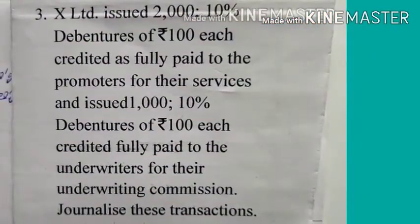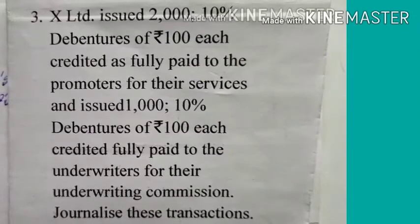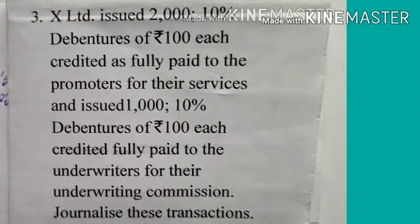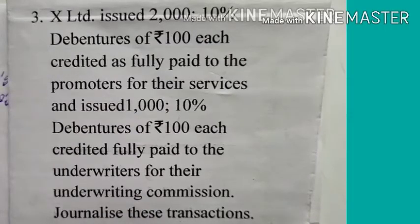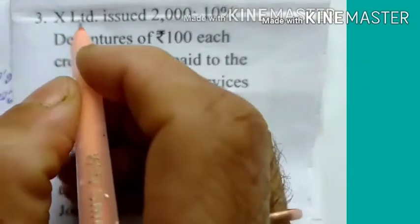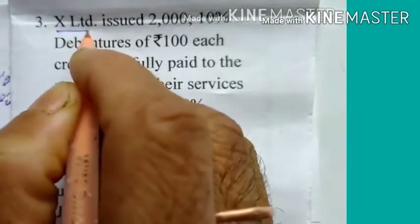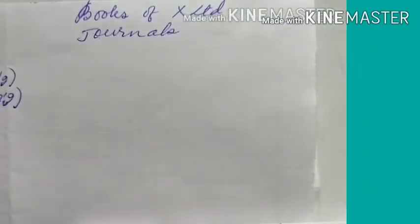Question number three: X Limited issued 2000 ten percent debentures of rupees 100 each, credited as fully paid, to the promoters for their services. And issued 1000 ten percent debentures of rupees 100 each, credited as fully paid, to the underwriters for underwriting commission. Journalize these transactions.